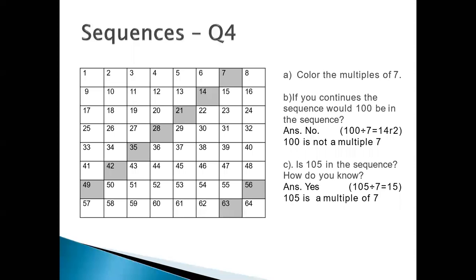Continue: 21 is the multiple of 7 — shade it. Skip 22 through 27. 28 is the multiple of 7 — color it. Skip 29 through 34. 35 is the required number — color it. Skip 36 through 41. Skip all numbers that are not multiples of 7. 42 is the multiple of 7. Recall your table of 7; all the answers from recalling the table are the multiples of 7.